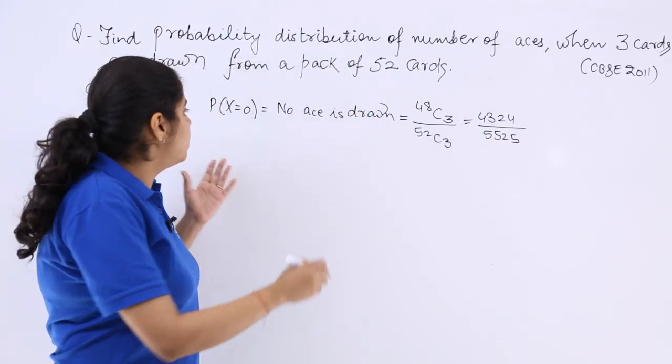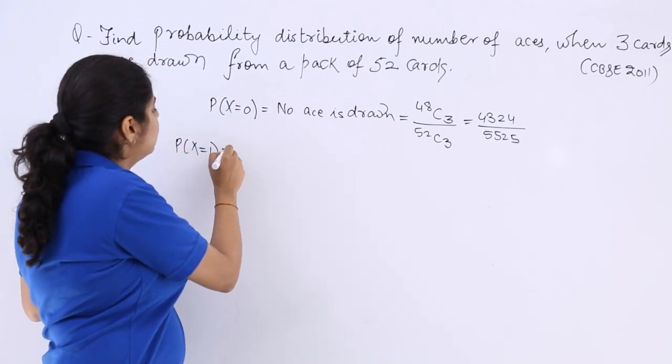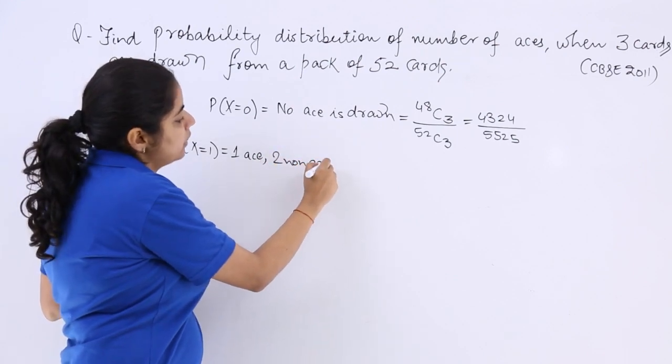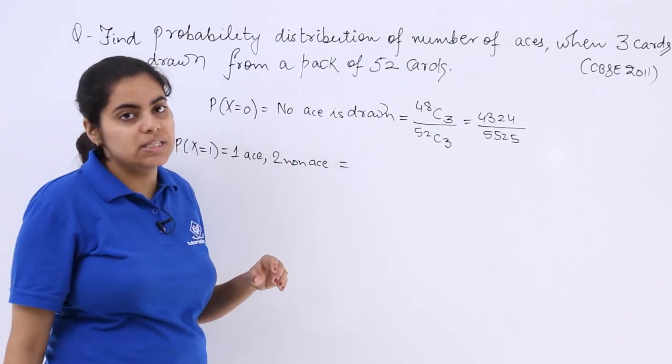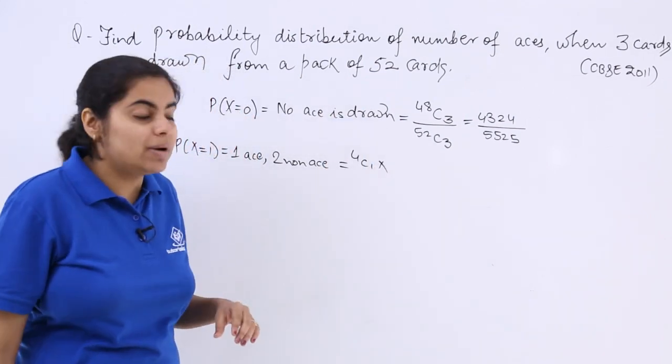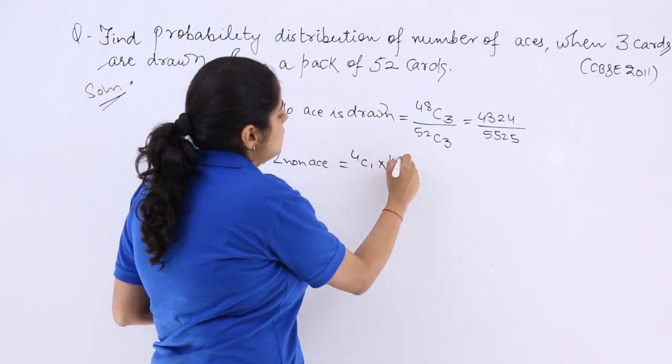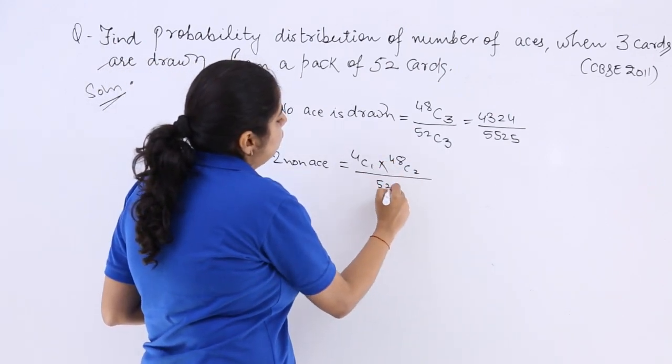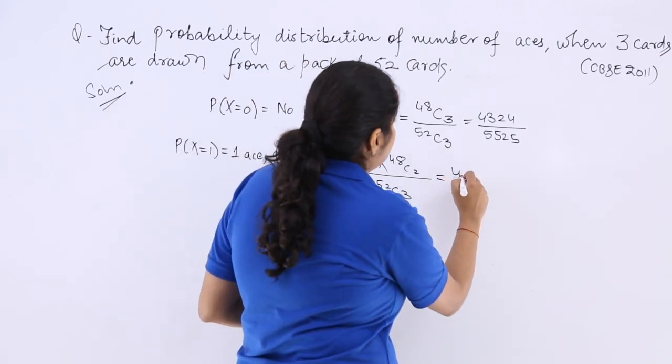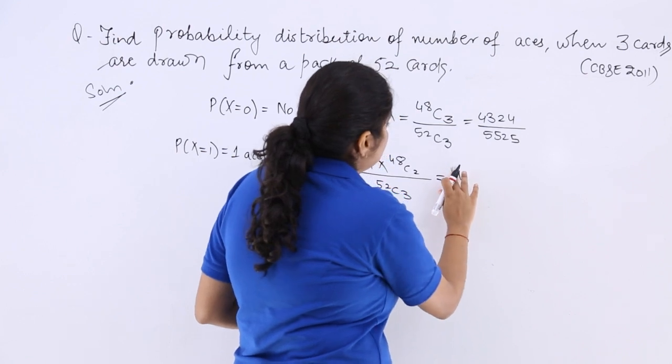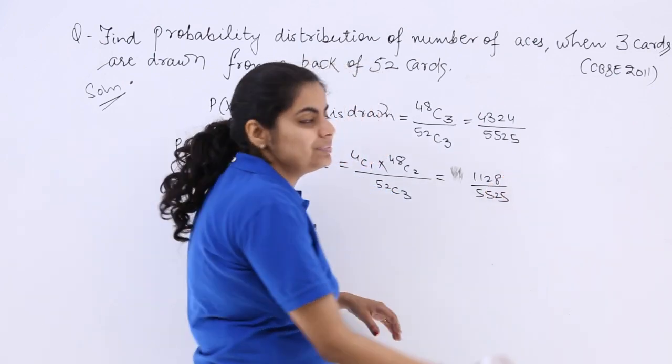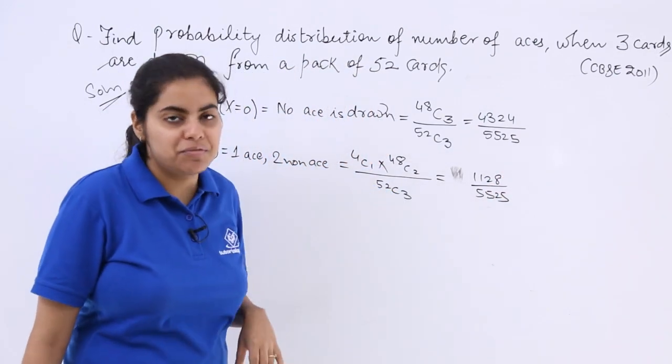Now next, when we say that probability X is equal to 1, that means 1 ace is drawn and 2 non-ace cards are taken out. From 1 ace that you are going to draw, so it is 4c1 multiplied by 48c2 over 52c3. So the calculation for this will be 1128 over 5525, because 52c3 gives me 5525.